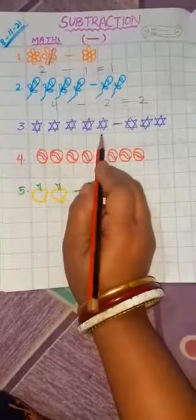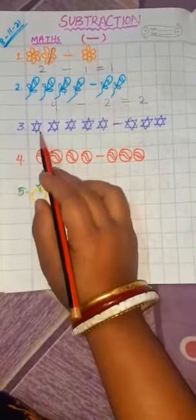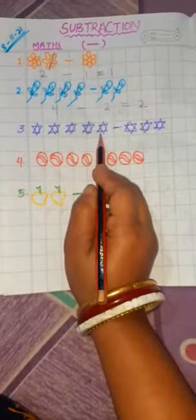Now here, how many stars here children? One, two, three, four, five stars. One, two, three, four, five.